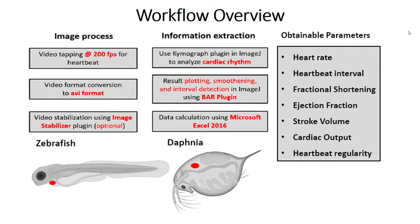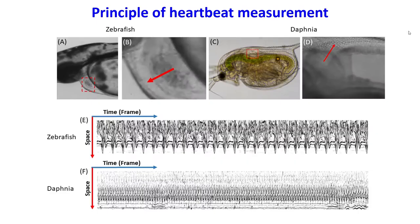The obtainable parameters are heart rate, heartbeat interval, fractional shortening, ejection fraction, stroke volume, cardiac output, and heartbeat regularity.